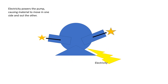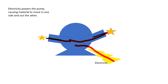Electricity powers the pump, causing the material to move in one side and out the other. The electricity powers it in and it shoots out the other side. And that is how the pump works in simplest terms.